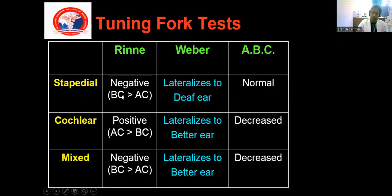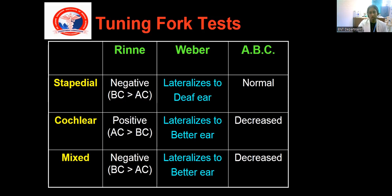When doing the tuning fork test in stapedial type of otosclerosis: Rinne's test will be negative — air conduction is affected, so bone conduction is more than air conduction. In Weber's test, it is lateralized to the ear with conductive hearing loss, or if bilateral, to the ear with more conductive hearing loss. The ABC test confirms bone conduction is normal in both ears since it is purely conductive hearing loss.